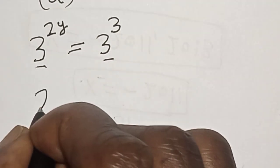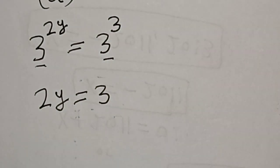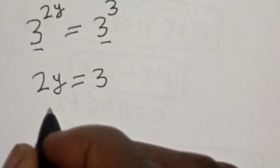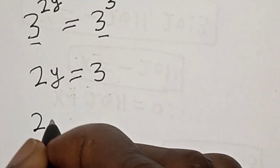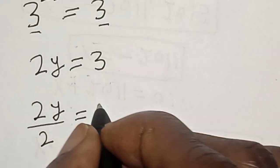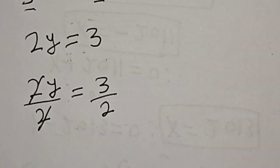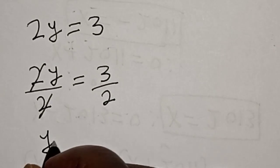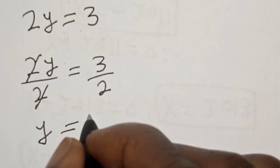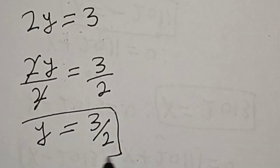Now 2y is equal to 3. Let's divide both sides by 2. 2y divided by 2 is equal to 3 divided by 2. This will cancel out. y is equal to 3 divided by 2. That is our final answer.